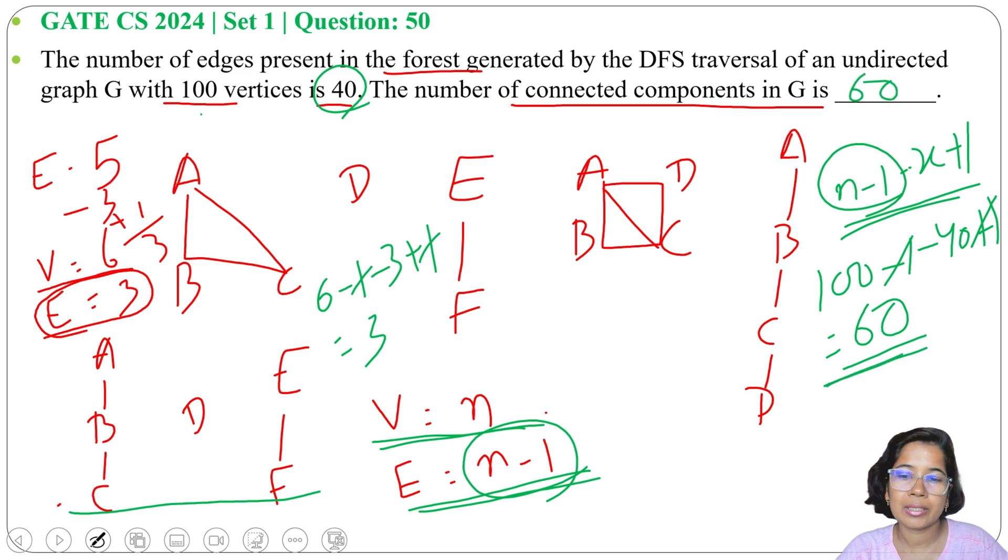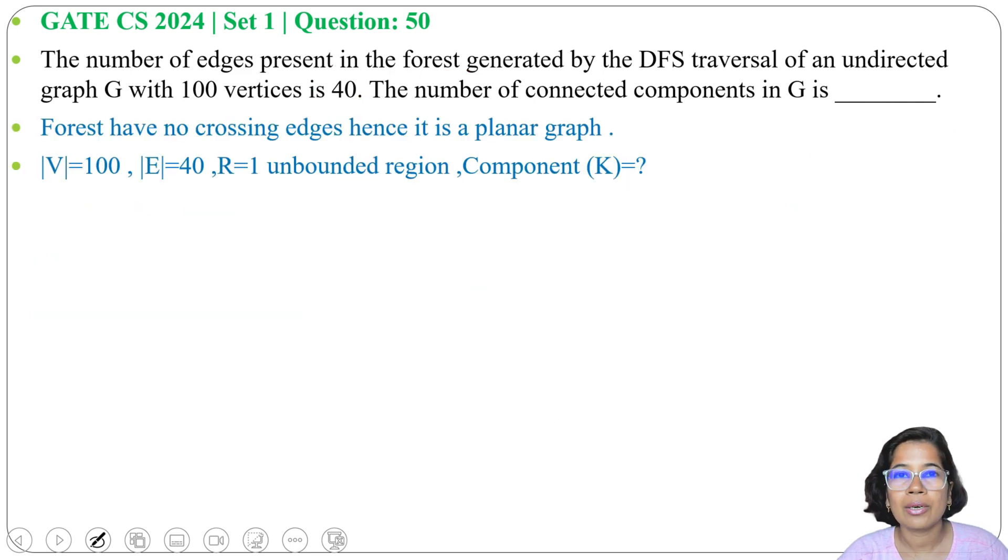This is one way. We just checked some graphs and DFS and we found this formula and we got answer as 60. Another way we can use Euler's formula for planar graph. In DFS forest, there are no crossing edges. So it's a planar graph. For planar graph, we already know Euler's formula. So according to Euler's formula, V plus R equals to E plus 2.